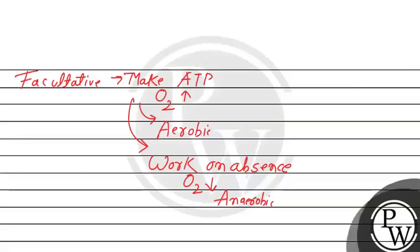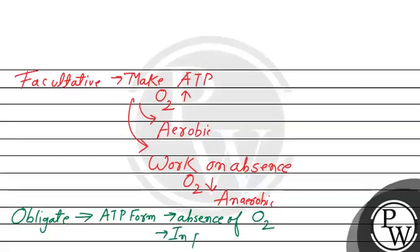Now we will see that obligate means the bacteria will only work when there is absence of oxygen. If there is presence of oxygen, it is going to die. So it is clear that obligate bacteria are not able to switch between aerobic and anaerobic.